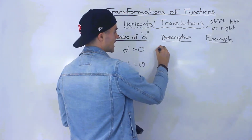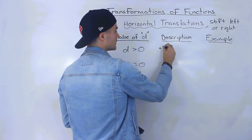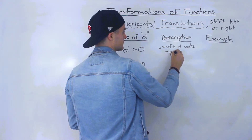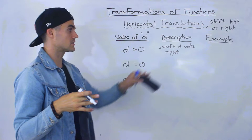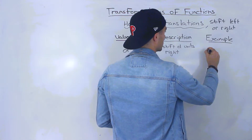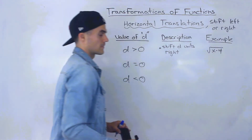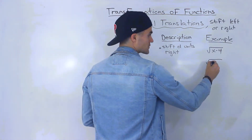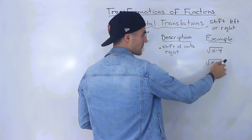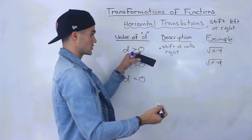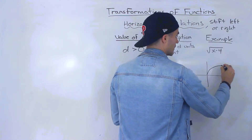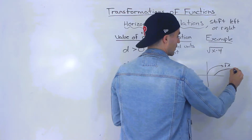If d is greater than 0, then we shift d units to the right — a horizontal translation d units to the right. For example, if we have the square root of x minus 4, notice the general transformation format is x minus d. So with x minus 4, the d value is 4, which is greater than 0. So we're taking the square root of x and shifting it 4 to the right.